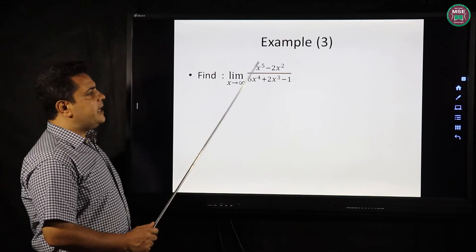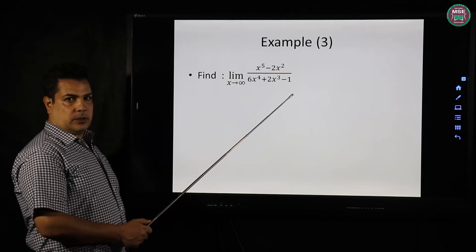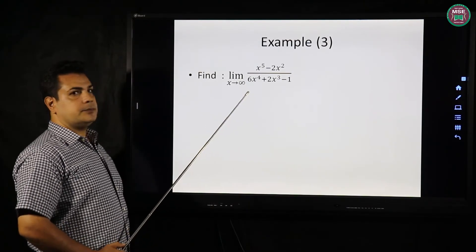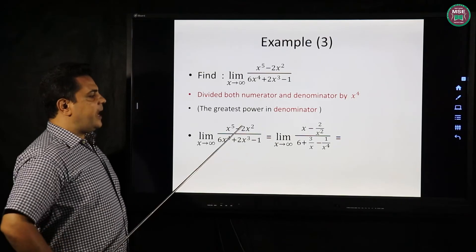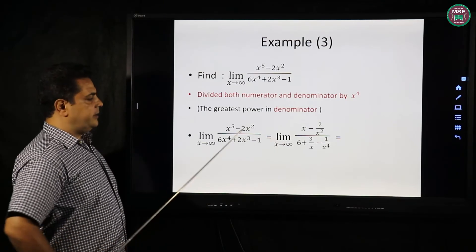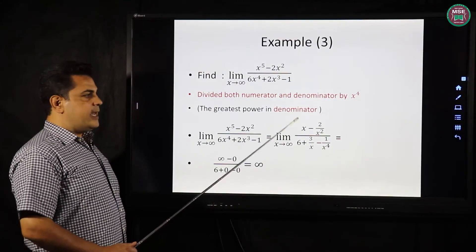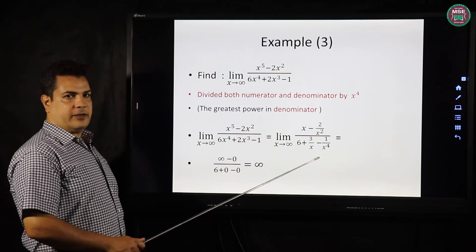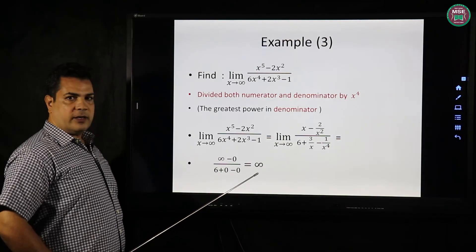Another one. Limit x tends to infinity of x to the power 5 minus 2x squared over 6x to the power 4 plus 2x cubed minus 1. Divide by the greatest power of the denominator, meaning divide by x to the power 4. x to the power 5 over x to the power 4 equals x, and 2x squared over x to the power 4 equals 2 over x squared. Then 6x to the power 4 over x to the power 4 equals 6. So the limit becomes: x minus 2 over x squared, over 6 plus 3 over x minus 1 over x to the power 4. If we substitute x equals infinity, that equals infinity over 6, which equals infinity.